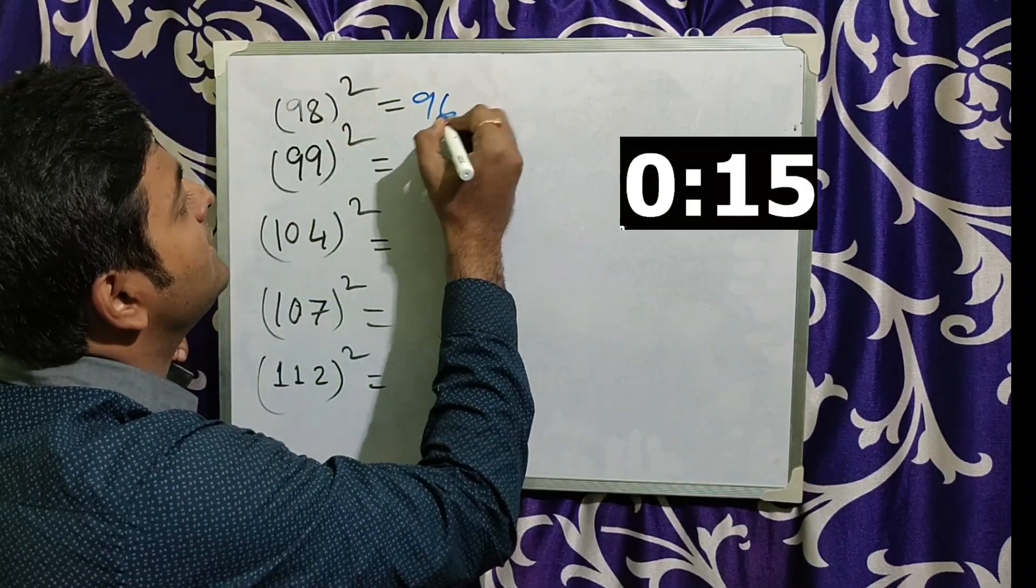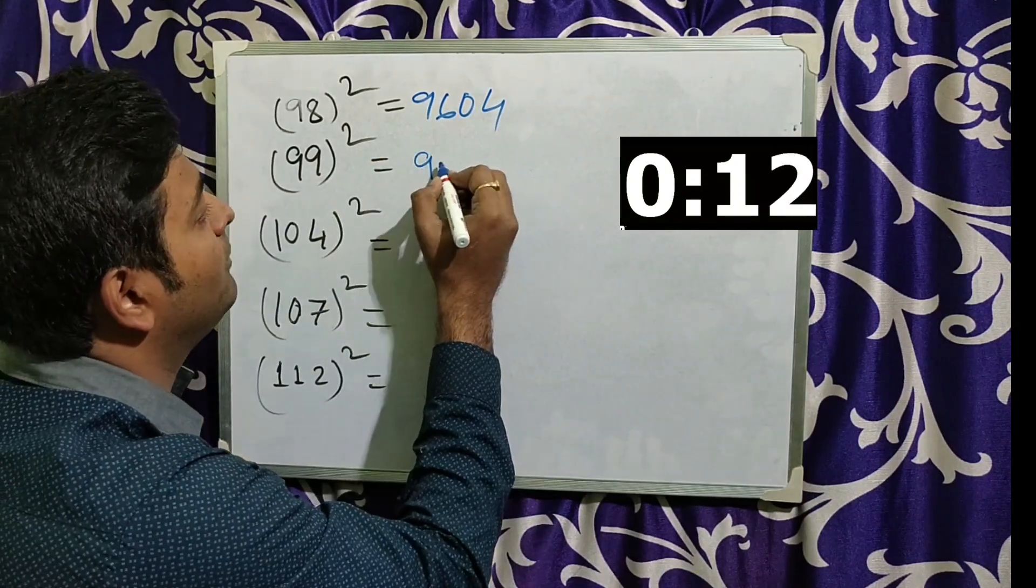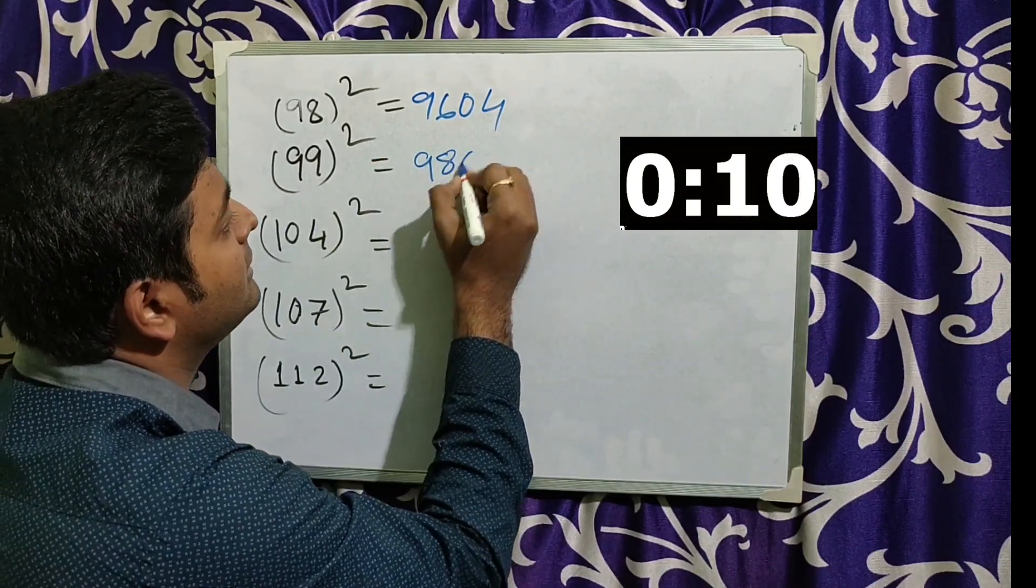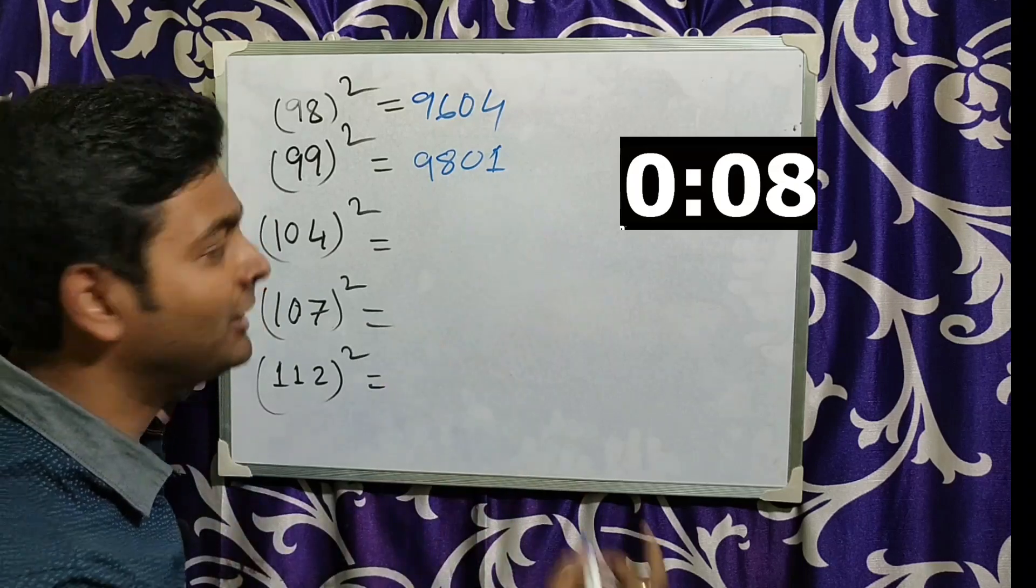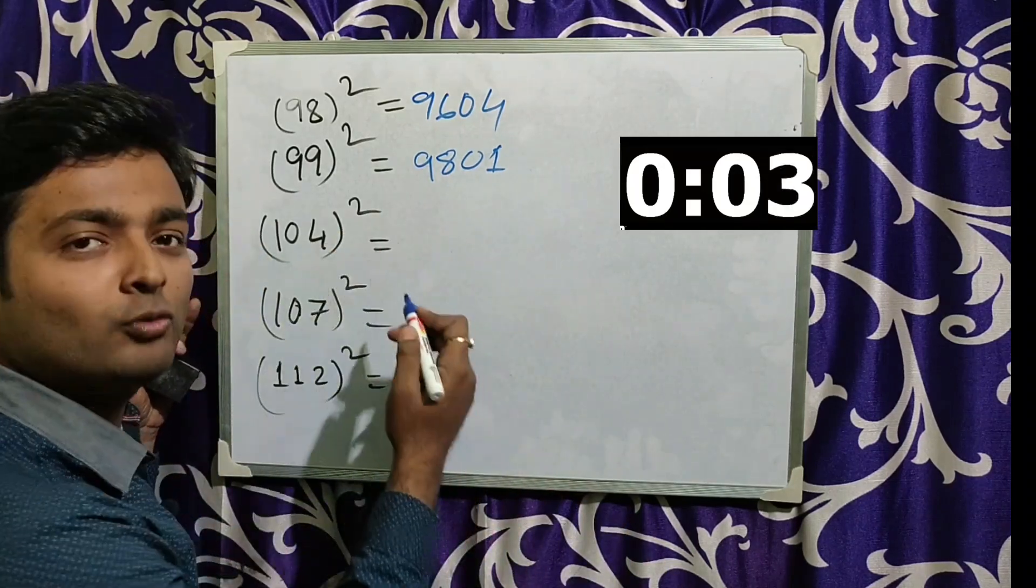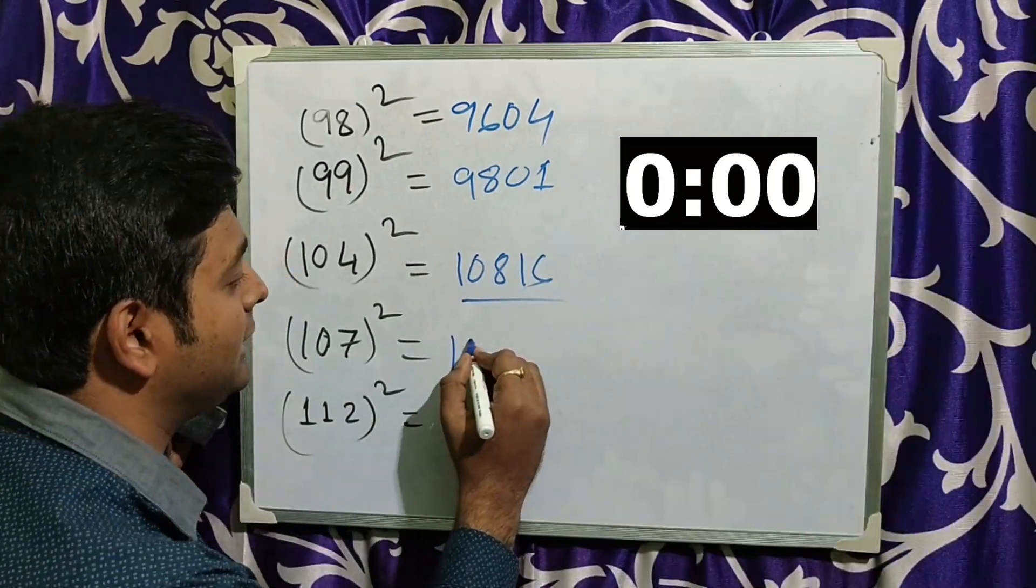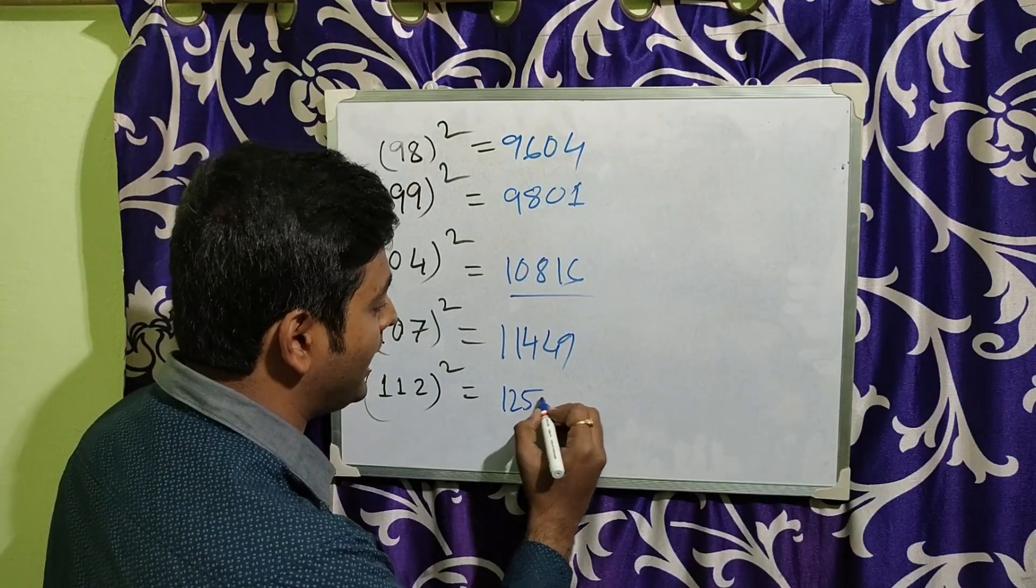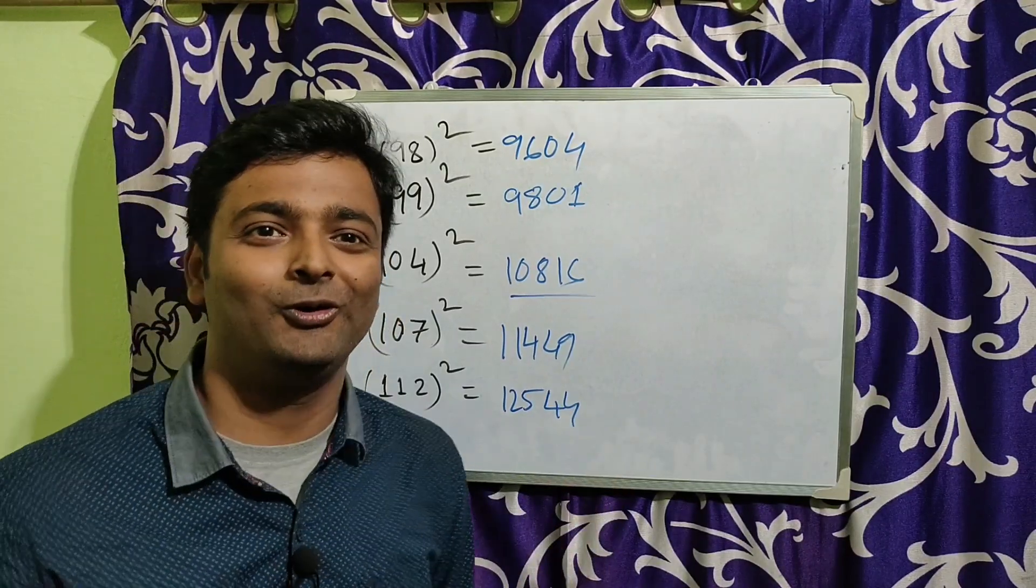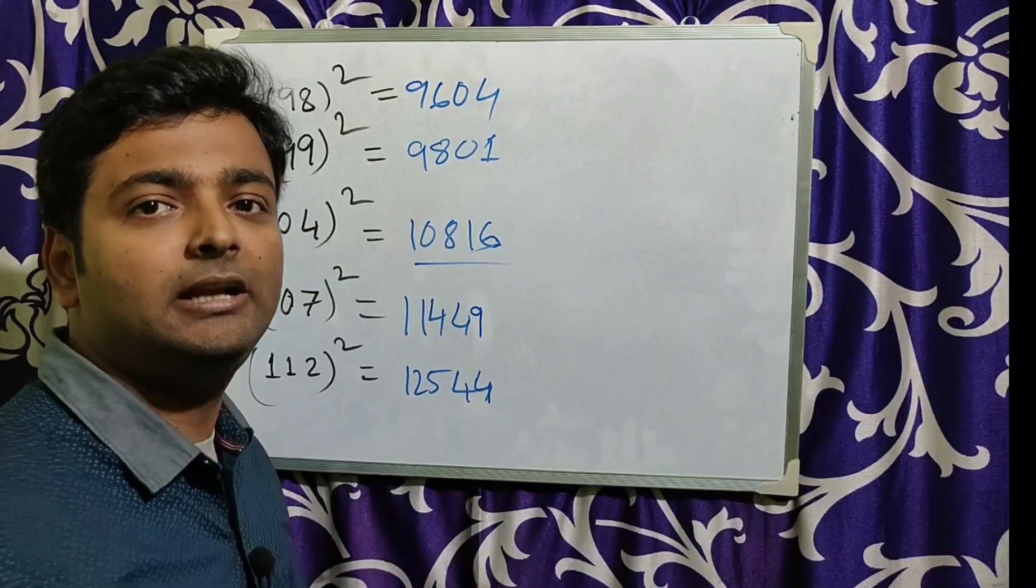99 square will be 9604, that's done. Next, 99 square will be 9801, second one is also done. And 104, do you know this big number? So a square is also 10816. Bingo! Now I am going to tell you the trick behind it.